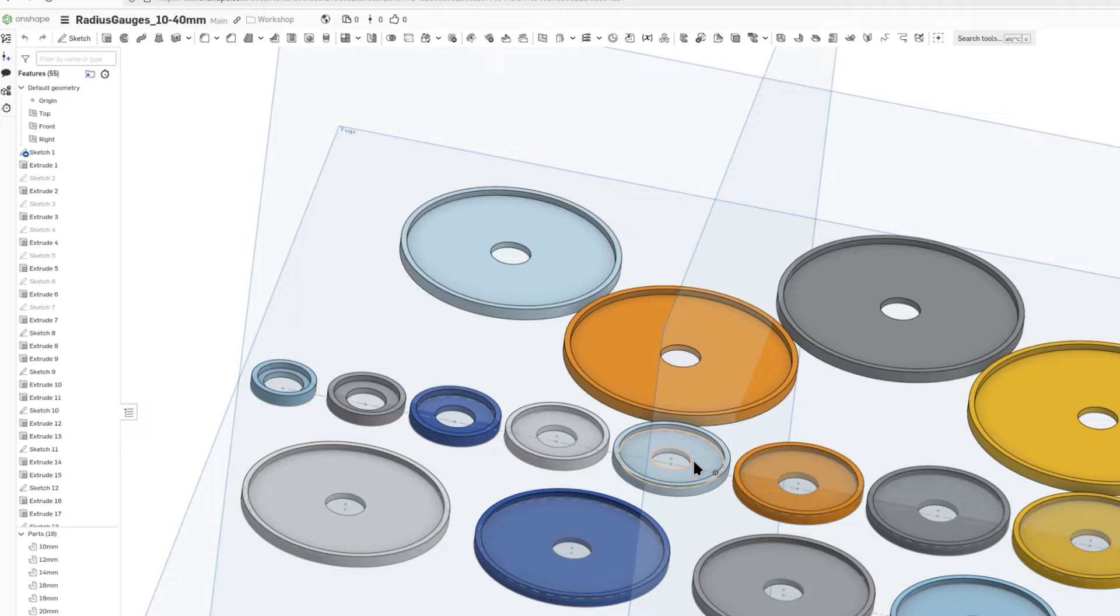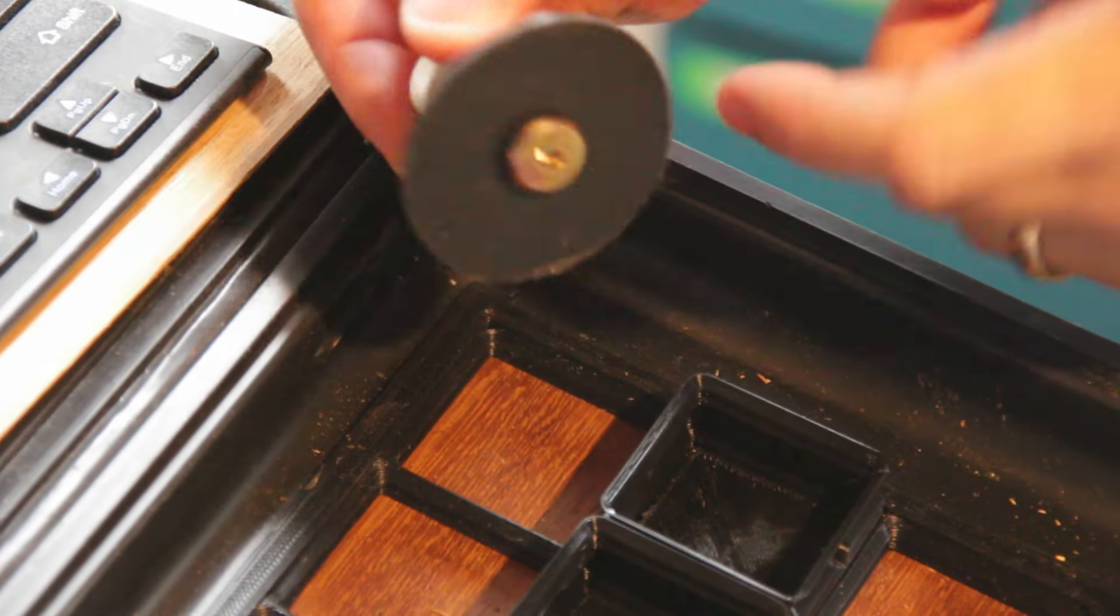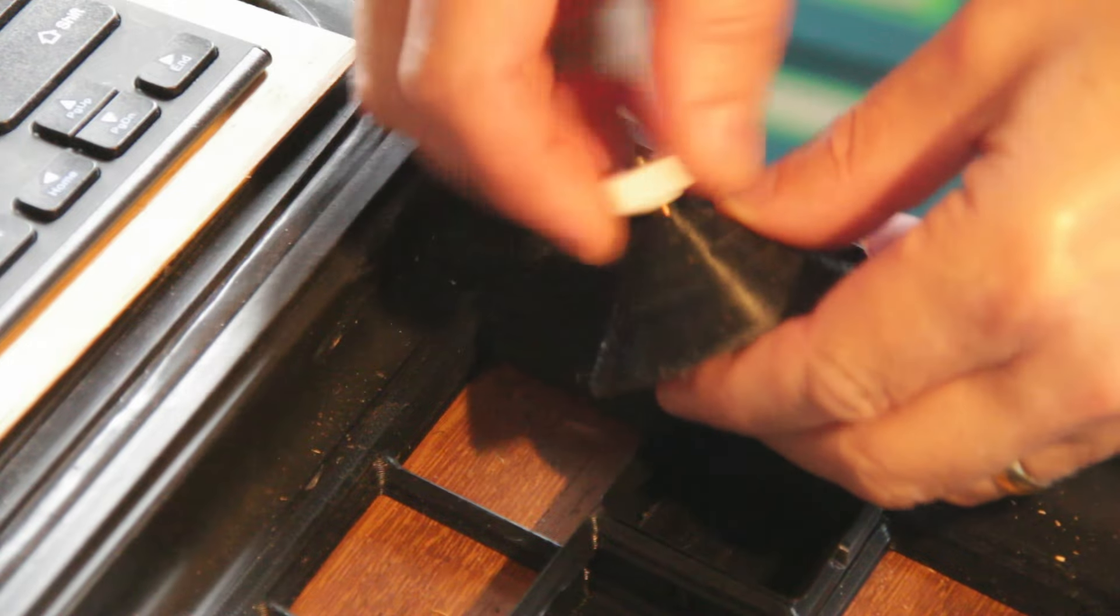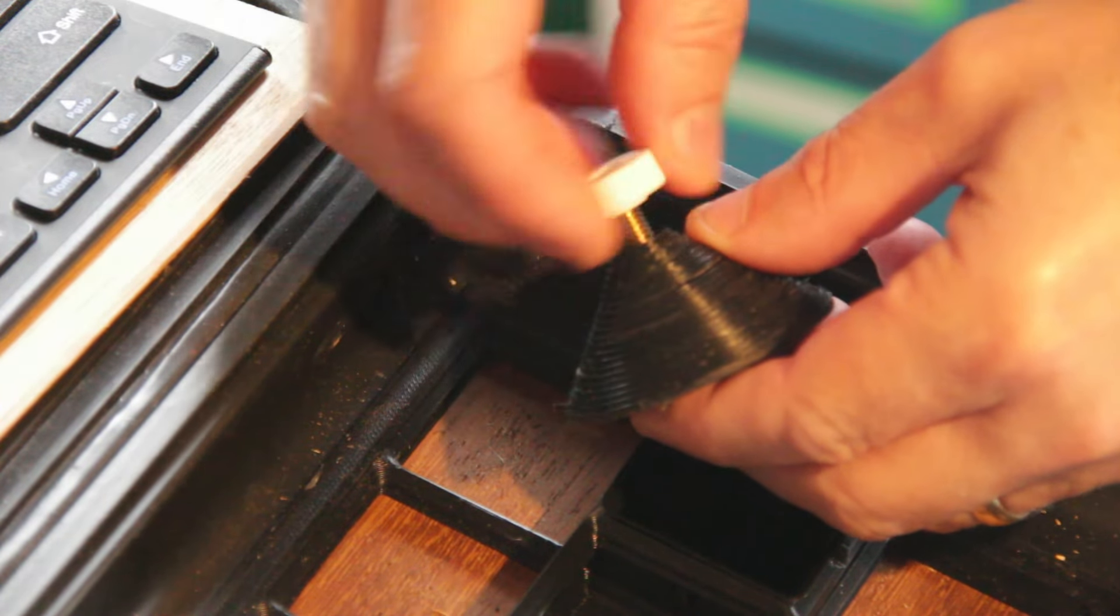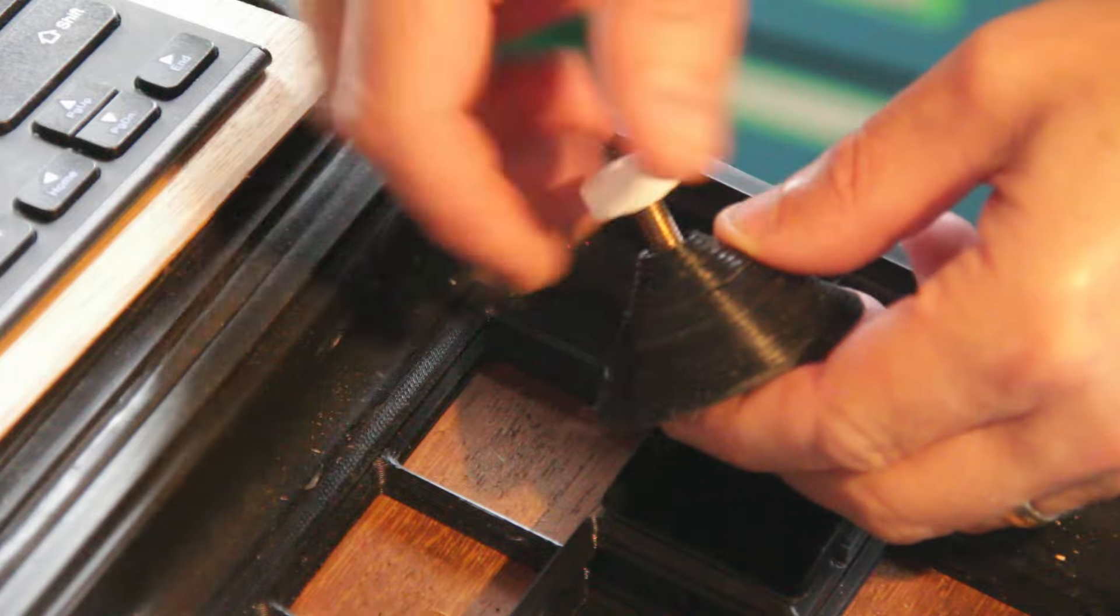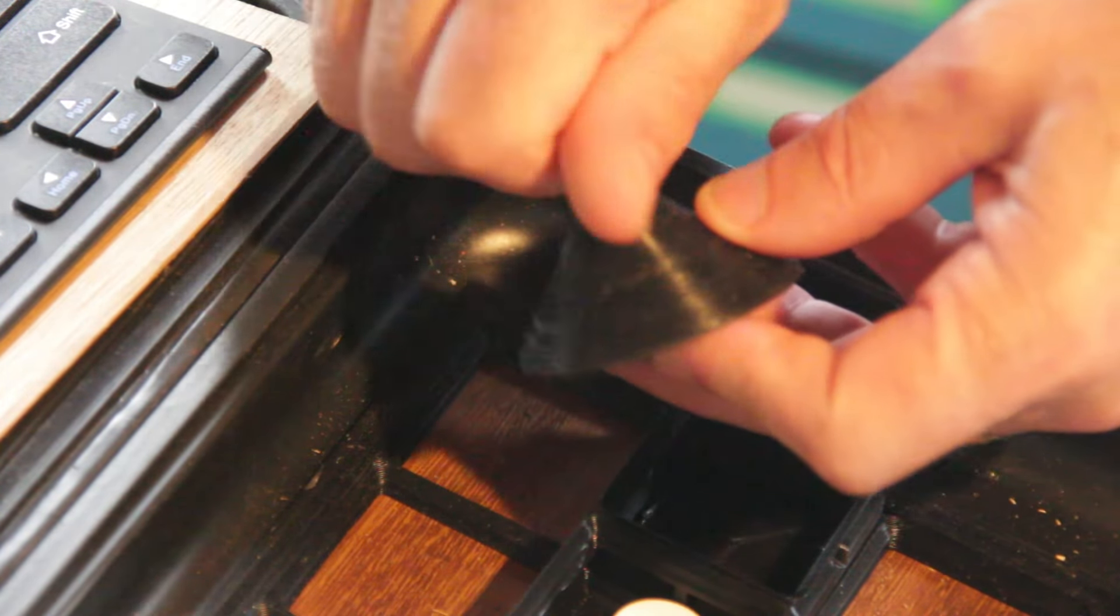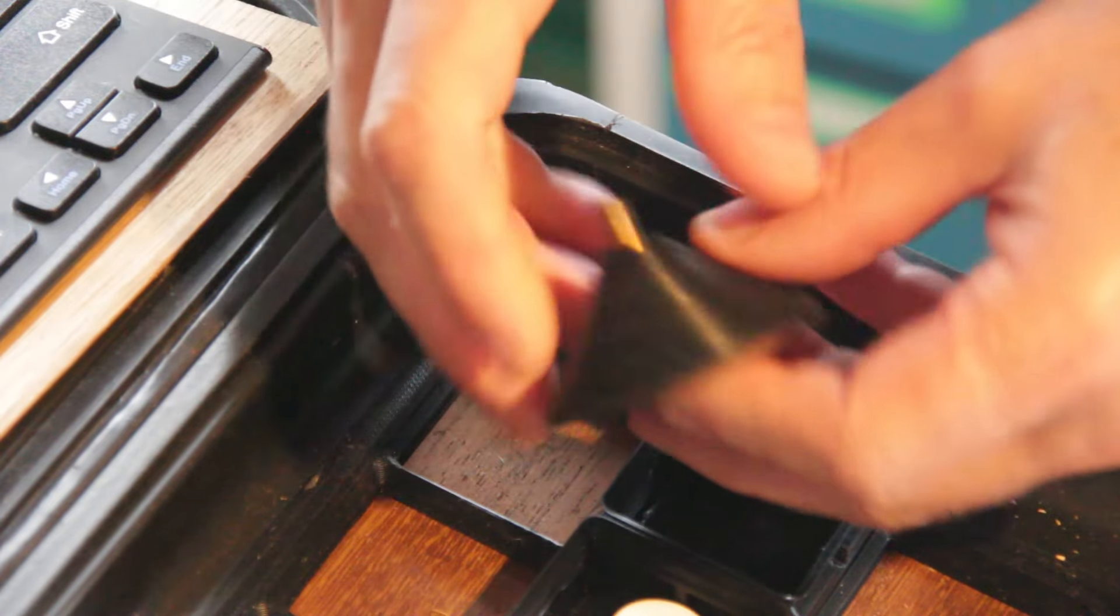So here are my radius gauges and I've fitted them onto an M6 bolt. They're slightly tighter than I would have liked. I made the hole 6.2 and I think it needed to be 6.3 or 6.4.